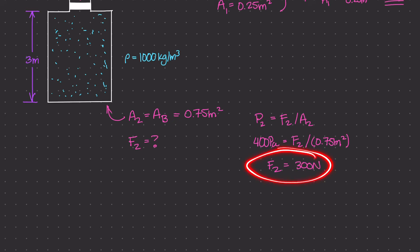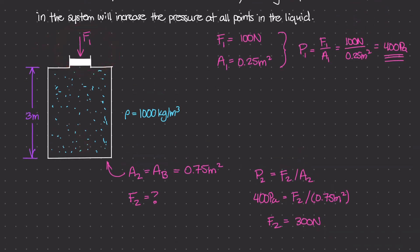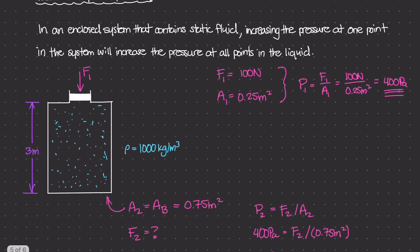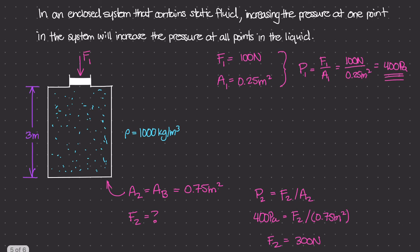F2 is the force being applied at the bottom of this container due to the pressure increase from the piston at the top. We only had to apply 100 newtons over a small area at the top, and that increased the force at the bottom by a factor of three — from 100 newtons to 300 newtons. That is the beauty of Pascal's principle, and this idea comes into play in hydraulic systems, where a force over a small area induces a larger force on a bigger surface area.